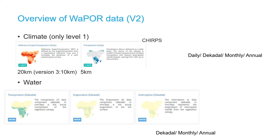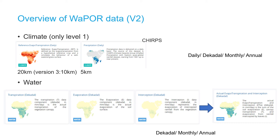The water-related data layers are all created specifically for the WAPOR database and consist of separate layers for interception, evaporation, and transpiration, as well as a combined layer of actual evapotranspiration and interception. All these layers are available at decadal, monthly, and annual time steps.